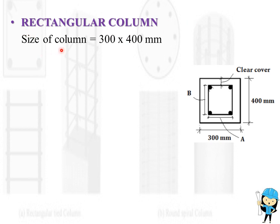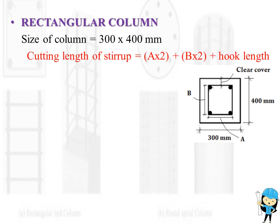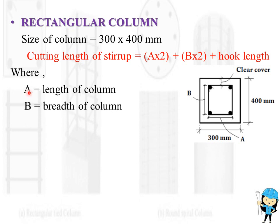Rectangular column. Size of the column is 300 x 400 mm. Cutting length of the stirrup is equal to (A x 2) plus (B x 2) plus hook length, where A is equal to length of the column and B is equal to breadth of the column.